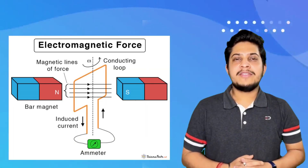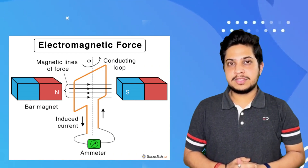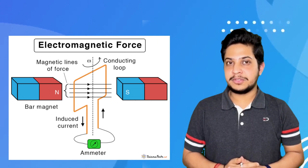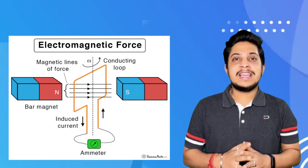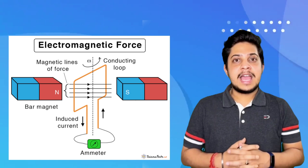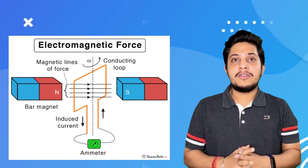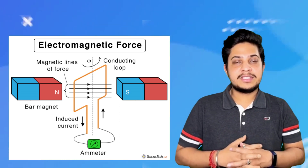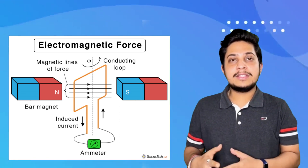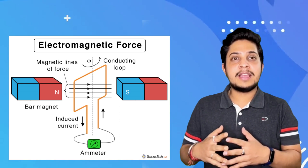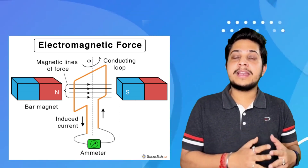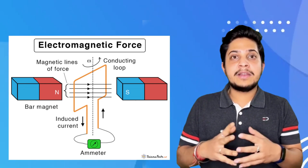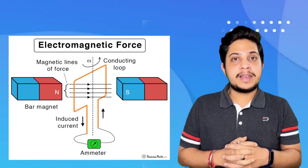Now we are going to the next force, which is electromagnetic force. Electromagnetic force tells us about the causes of electrical and magnetic effects — how the motion of a charged particle leads to magnetic fields and magnetic effects, and how the motion of magnetic fields can lead to electric fields. Electric and magnetic forces are combined and studied under electromagnetic force.